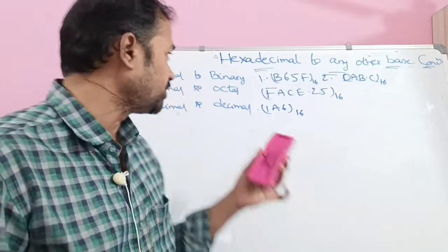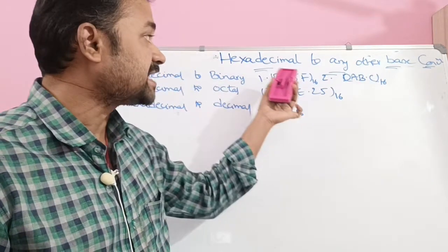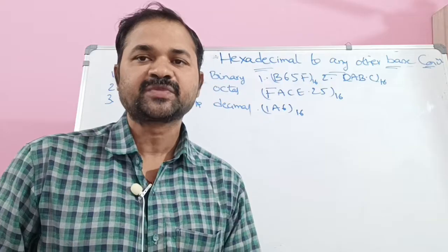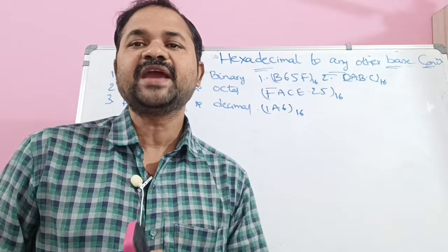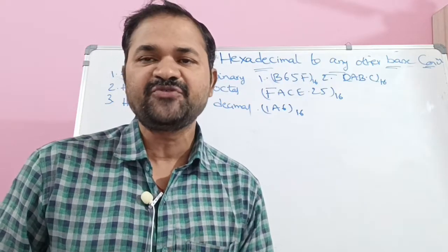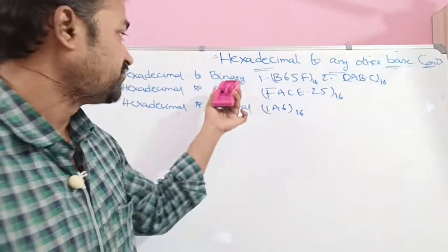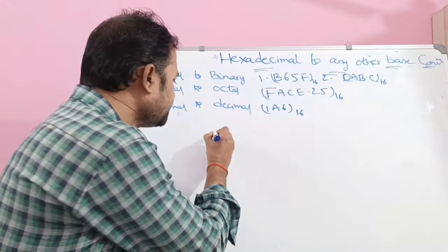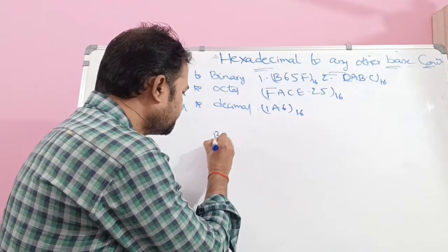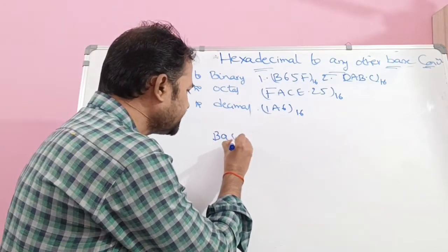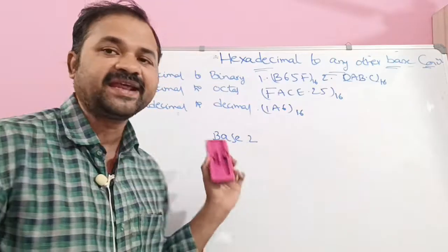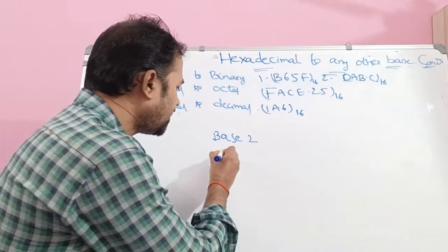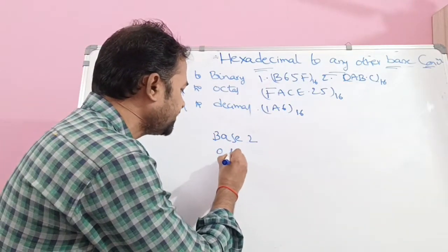Now let us discuss hexadecimal to any other base conversion. We mainly have 4 types of number systems. The first one is the binary number system. Binary means the base value is 2. A binary number mainly contains 2 symbols: 0 and 1.